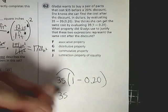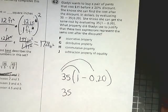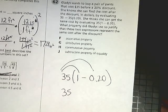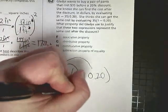35 times 1 would give you 35. 35 times negative 0.2, or negative 35 times negative 0.2. That essentially gives you this.